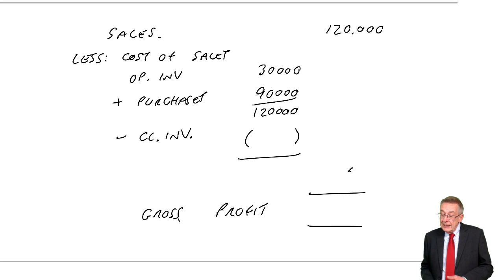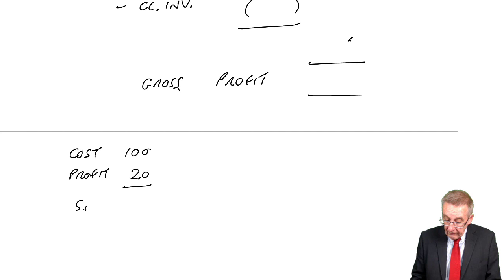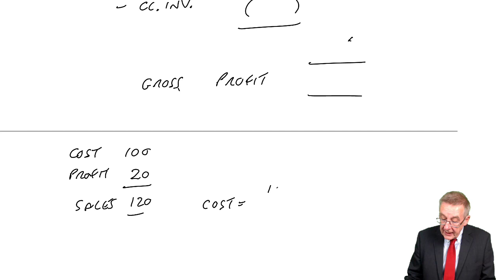So, how can I work out what the closing inventory should have been? Well, we know the markup. We know the markup is 20%, so we can work out what the gross profit and the cost of sales should have been. It was a markup, so for every $100 cost, we'd have been adding on the markup, the profit, 20%. The sales would be 120, or use X's if you want. But it means for every 120 sales, the cost should have been 100. The cost is always going to be 100 out of 120 of whatever the sales were.